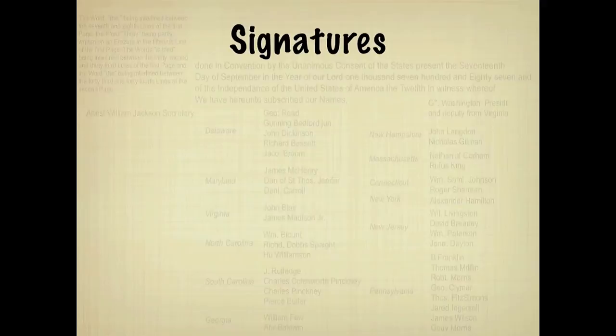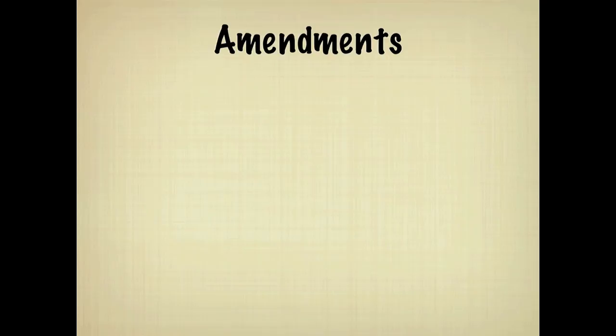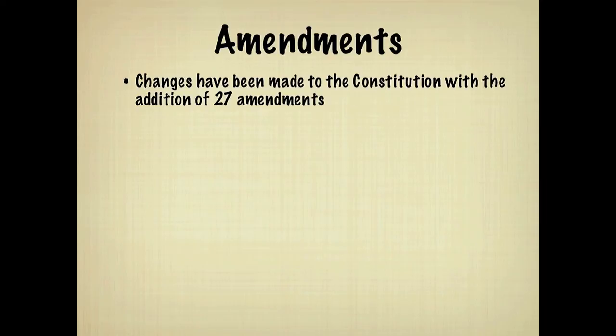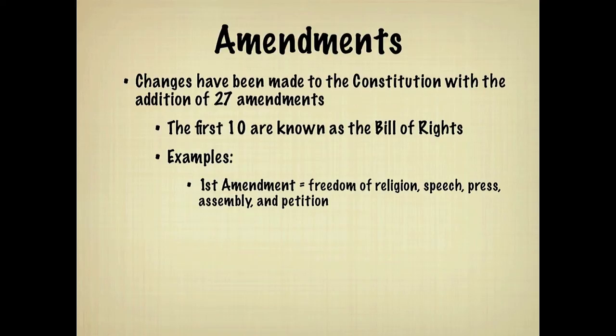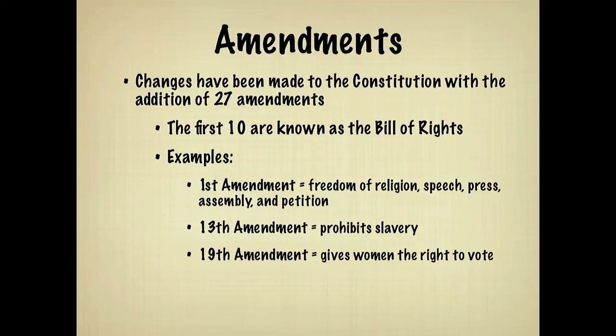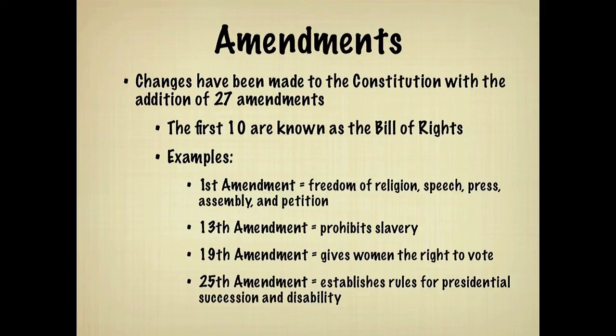Since the Constitution went into effect, changes have been made with the addition of 27 amendments. The first 10 amendments are known as the Bill of Rights. Here are a few examples of the amendments. The First Amendment gives citizens freedom of religion, speech, press, assembly, and petition. The Thirteenth Amendment prohibits slavery. The Nineteenth Amendment gives women the right to vote. And the Twenty-Fifth Amendment establishes rules for presidential succession and disability, specifically stating that the Vice President will take over for a President who dies, resigns, is removed, or is temporarily unable to fulfill the presidential duties.